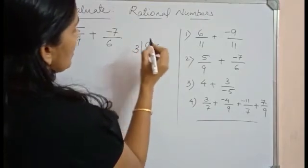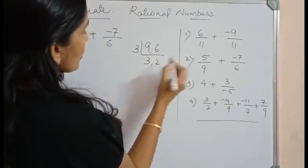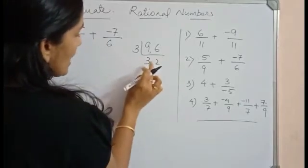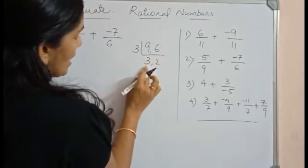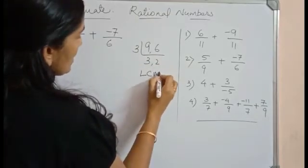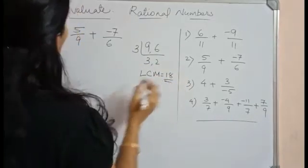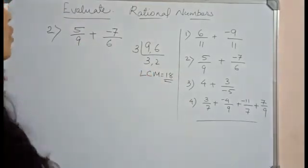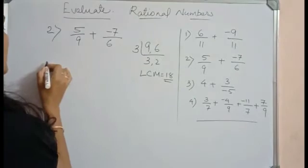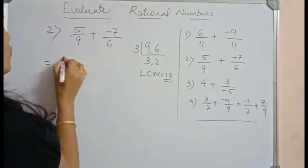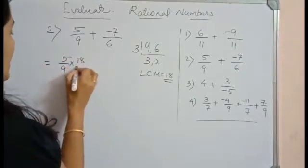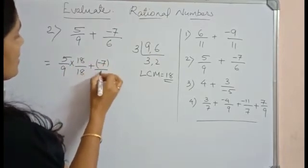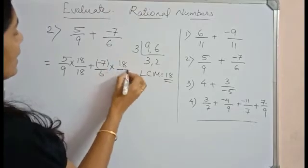9, 6. If we divide it by 3, 3 3's are 9 and 3 2's are 6. Here further division is not possible. So LCM will be 3 3's are 9, 9 2's are 18. So LCM is equal to 18. Now we have to make both the fractions with the same denominators. That's equal to 5/9 × 18/18 + (-7/6) × 18/18.